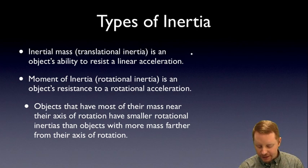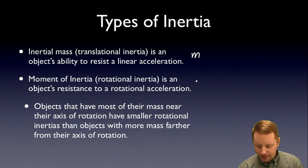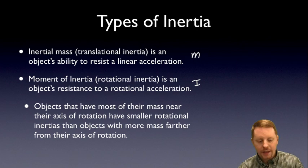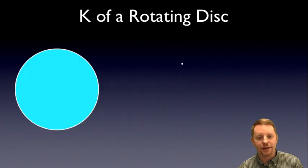Inertial mass, or translational inertia, we usually symbolize with M for mass, measured in kilograms. Moment of inertia is capital I, usually in kilogram meters squared. So that should get us started. To really understand this, why don't we begin by analyzing the kinetic energy of a rotating disk?